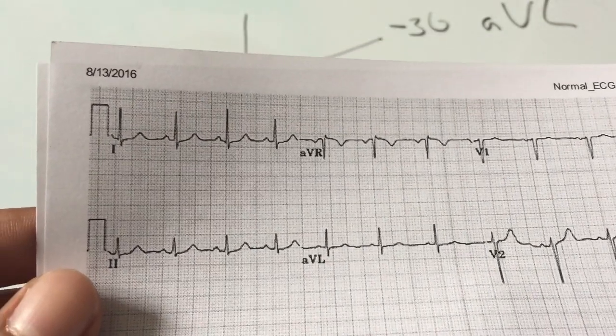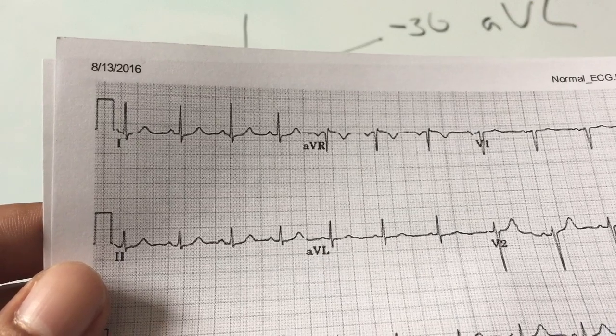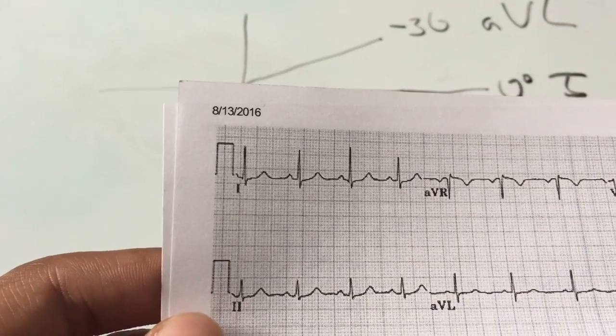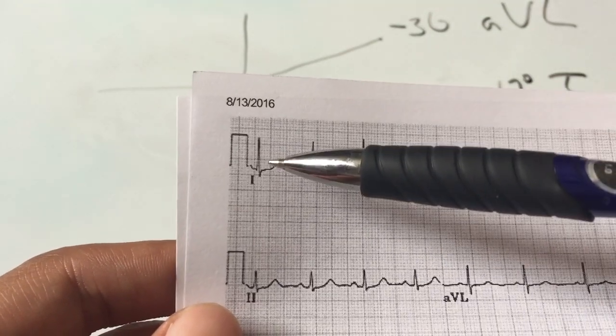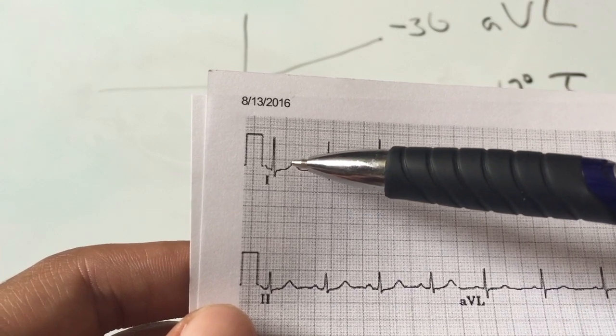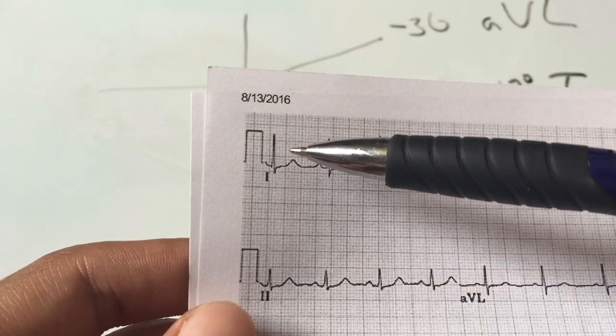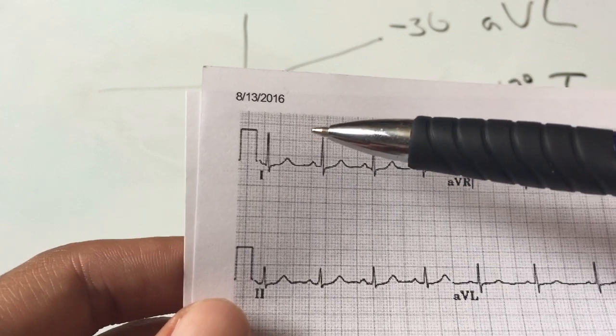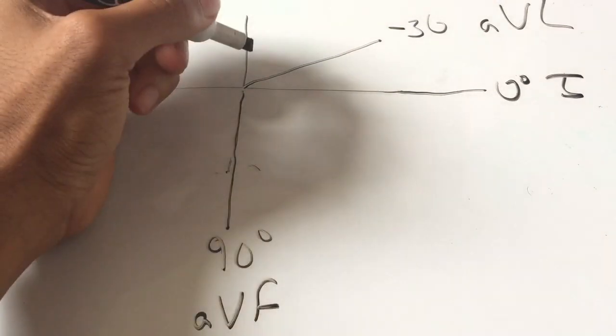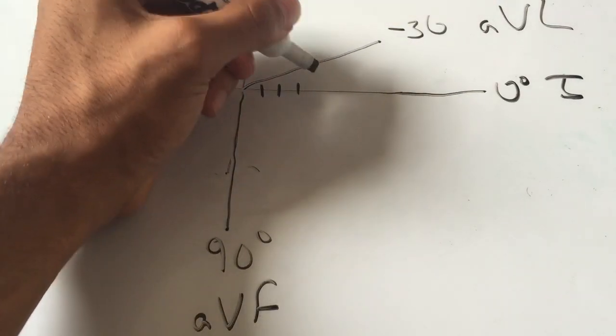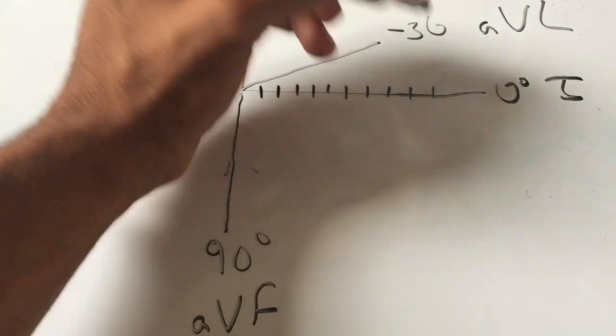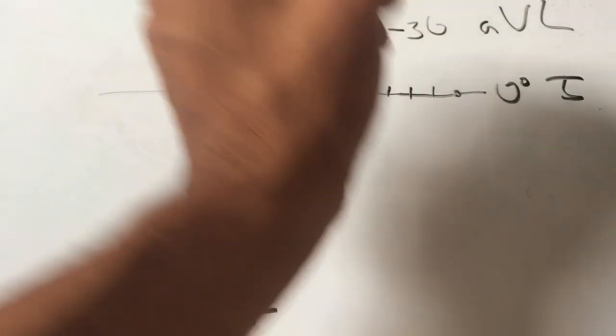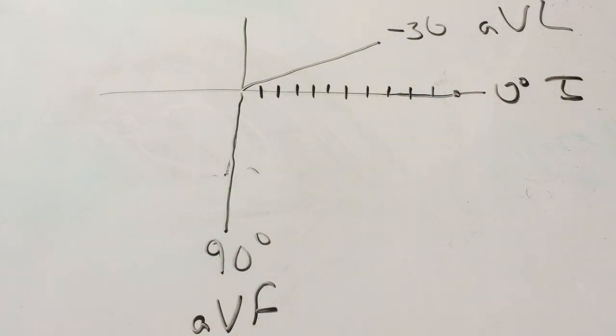So let's try it with a normal EKG. So here we have a normal EKG. Let's go ahead and look at lead one and determine the strength of the vector depolarization in the horizontal axis by counting the boxes. This looks like we've got 11 boxes. Let's go down to our board here and count that off: 1, 2, 3, 5, 6, 7, 8, 9, 10, 11. So that's our horizontal vector.